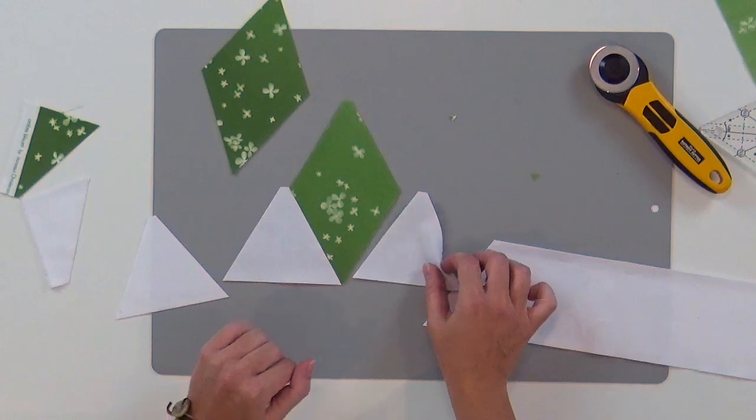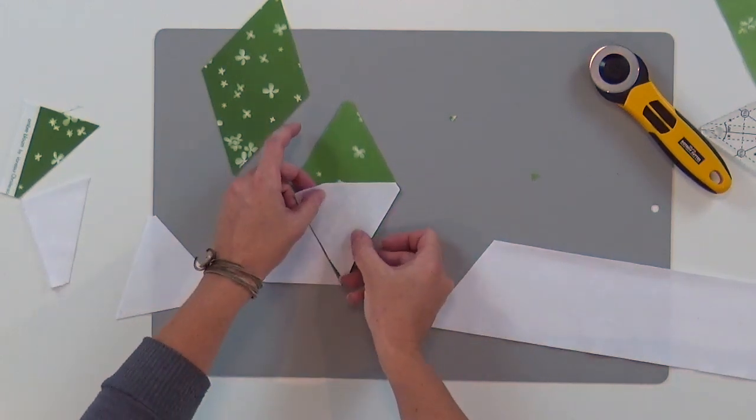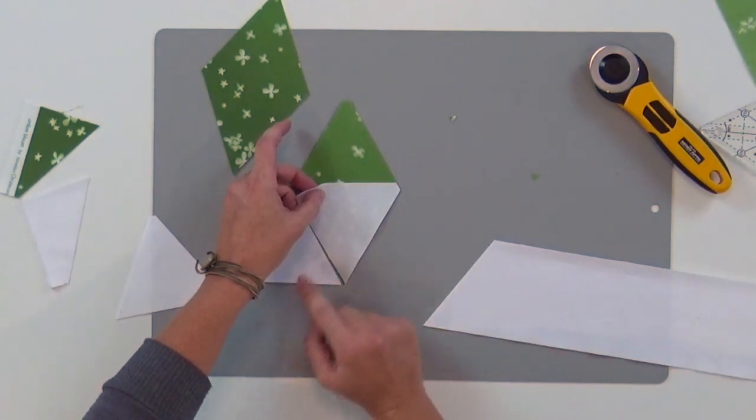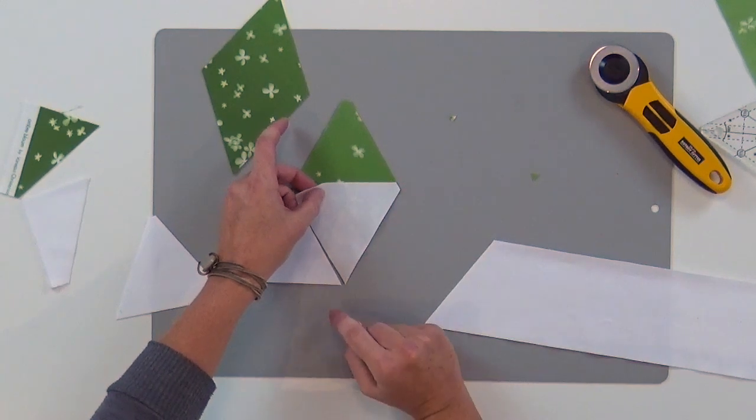Now because I talked about that flat tip, this is going to be really key. When you go to piece, that flat tip gives you your perfect matchup point. So your quarter inch is always accurate.